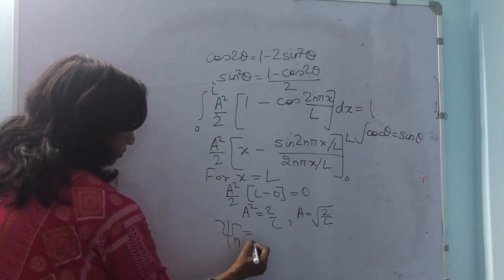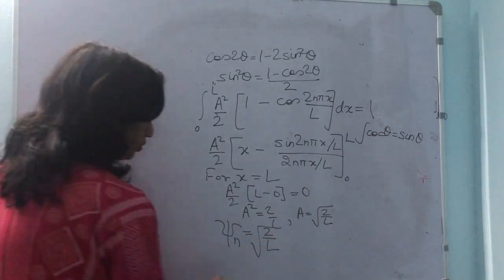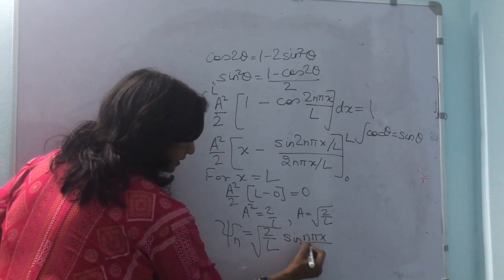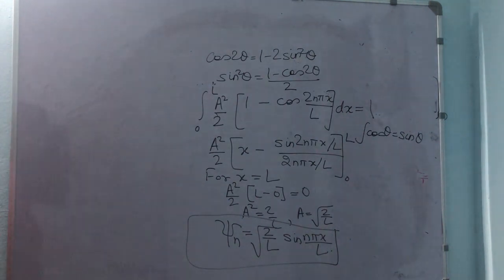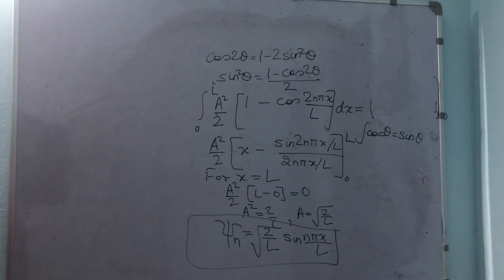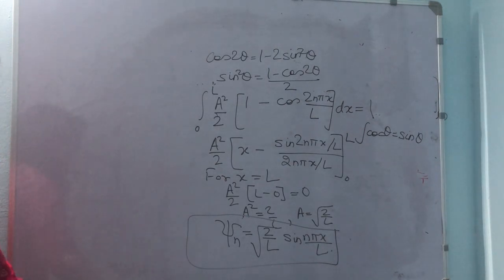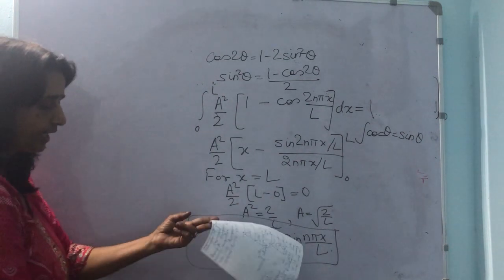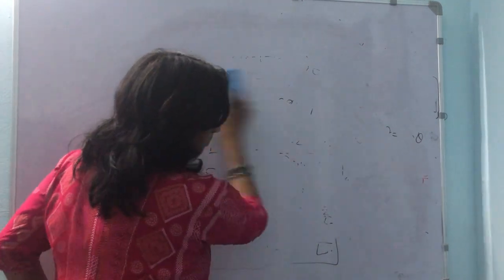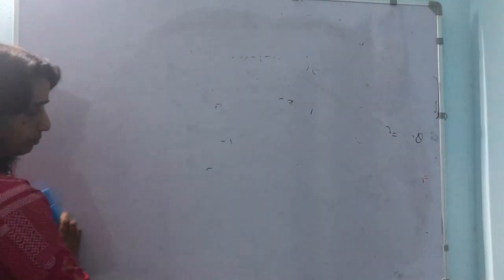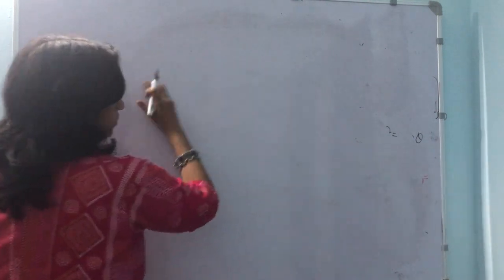Therefore, the normalized wave function becomes φₙ(x) equal to √(2/L) · sin(nπx/L). This is the normalized eigenfunction of the particle moving along a line between x equal to 0 and x equal to L with zero potential energy inside, and infinite potential outside. We can plot the first three normalized wave functions.